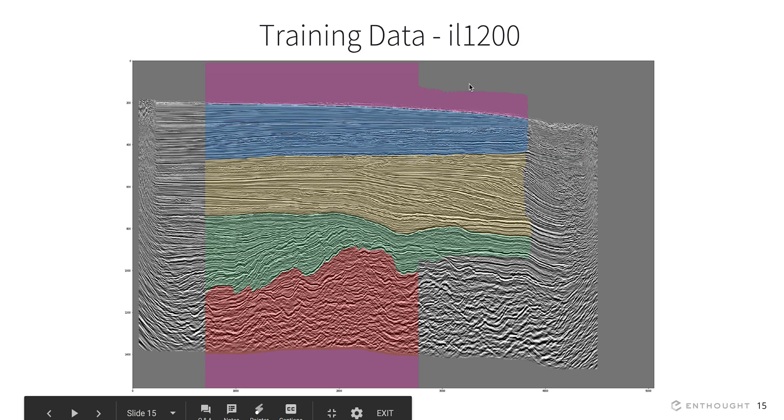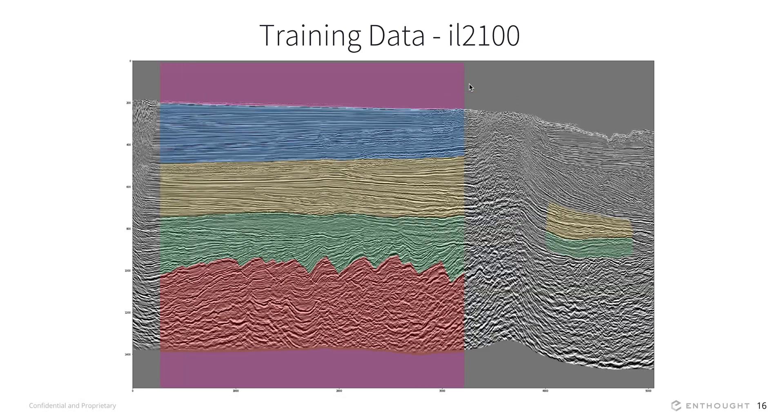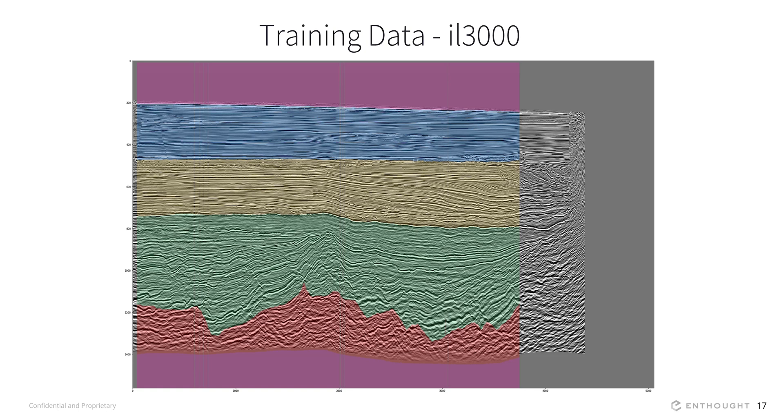Here, we're showing you basically an interpretation that one of the experts made on one of the lines. You can see three different colored segments—red, green, yellow, blue—and these represent what are called parasequences. So these parasequences are understood to be related in how they were created over time.